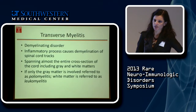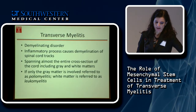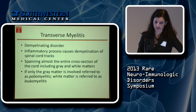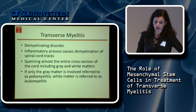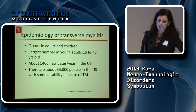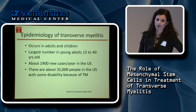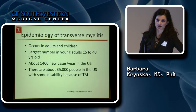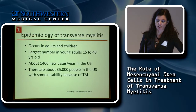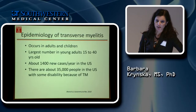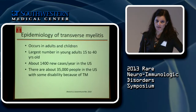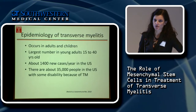Transverse myelitis is a demyelinating disorder affecting the spinal cord. Spinal cord pathology shows an inflammatory process that causes demyelination of the spinal cord tracts, covering almost the entire cross section of the cord including the gray and white matter. This disease occurs in adults and children, with the largest number of cases in young adults aged between 15 and 40. There are about 1,400 to 1,500 cases diagnosed in the US every year, and about 35,000 people in the US live with residual disability because of transverse myelitis.